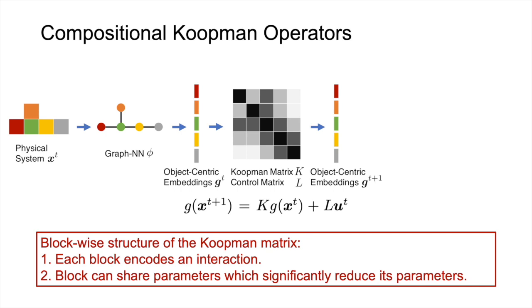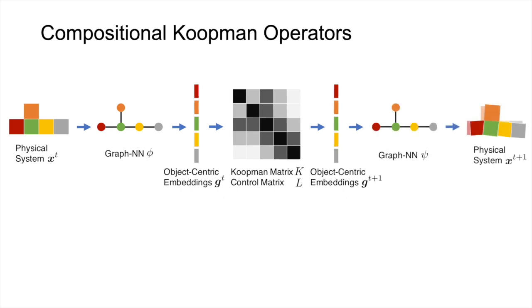This provides the good scalability of our model. To make the prediction of the future system states, we also have a graph neural network to decode the object-centric embeddings.